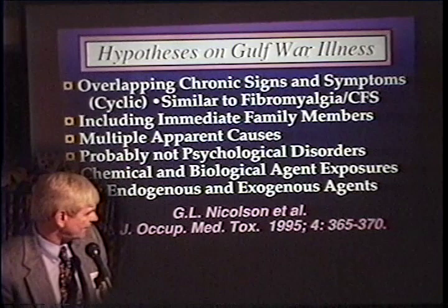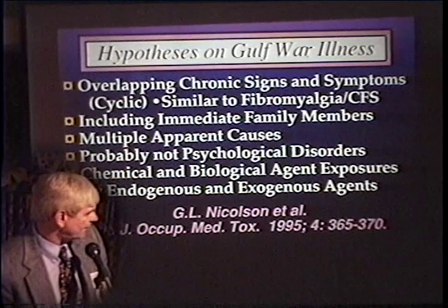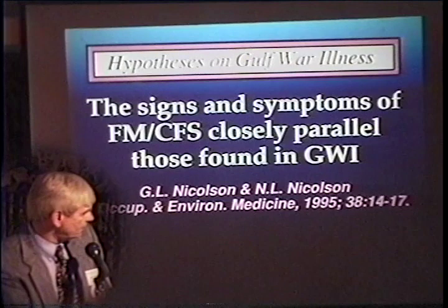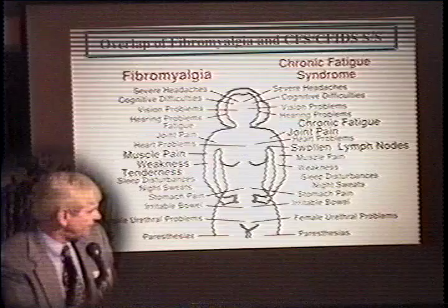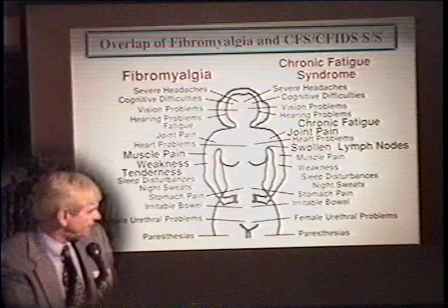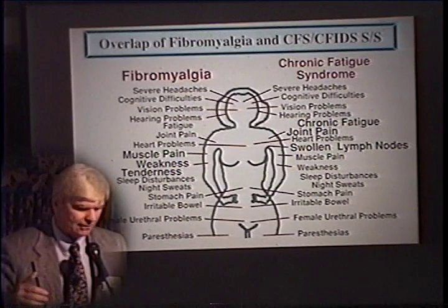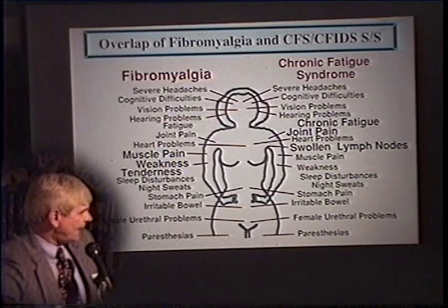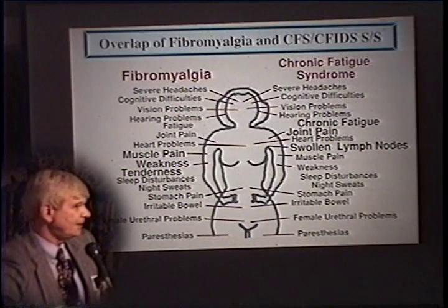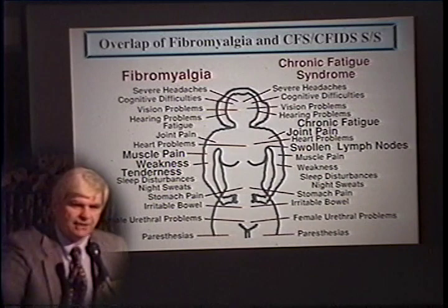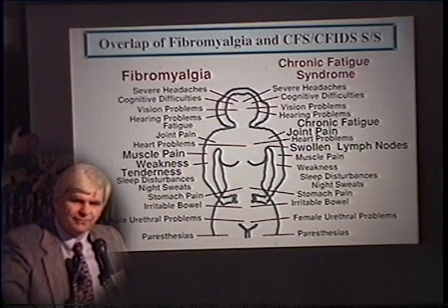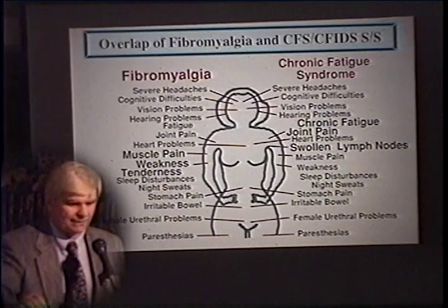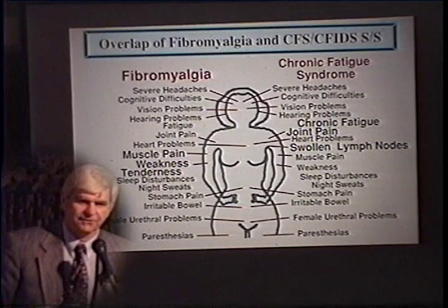We felt all along that these were due to chemical, biological, and other toxic exposures. When we looked at the signs and symptoms, they looked very similar to fibromyalgia syndrome and chronic fatigue syndrome — these two syndromes are overlapping entirely in their signs and symptoms profile. In fibromyalgia syndrome, the main difference is if a patient's primary complaints are muscle pain, weakness, and tenderness with trigger points of sensitivity, they'll generally get a diagnosis of fibromyalgia syndrome. If their major complaints are chronic fatigue and joint pain with sometimes swollen lymph nodes, they'll get a diagnosis of chronic fatigue syndrome. Otherwise the signs and symptoms are completely overlapping.